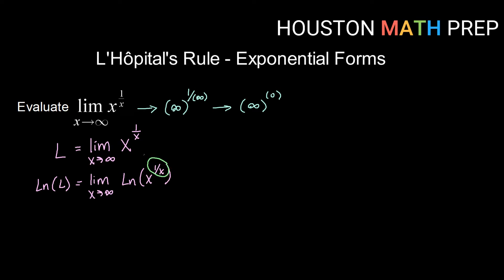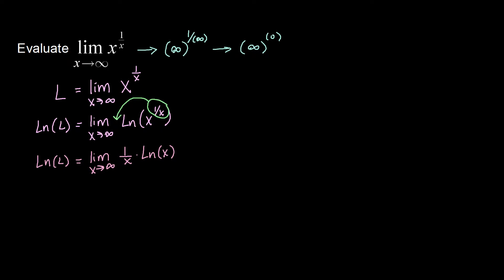My properties of logs say I can take this power and bring it down in front as a coefficient. So I will have the natural log of L is equal to the limit as x goes to infinity of 1 over x times the ln of x. We might also go ahead and rewrite it as the limit as x goes to infinity of ln x over x. Now as x goes to infinity, ln of x increases without bound — goes to infinity — and x goes to infinity, so now we have that infinity over infinity indeterminate form that allows us to bring in L'Hôpital's rule.